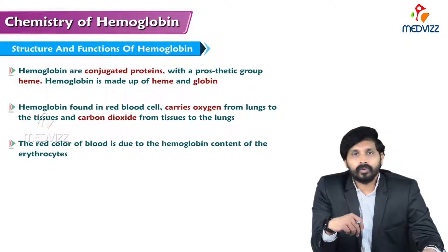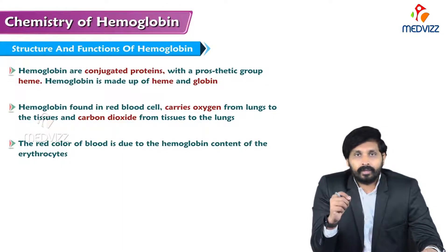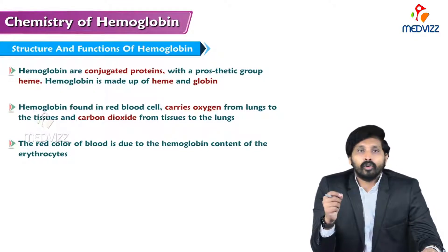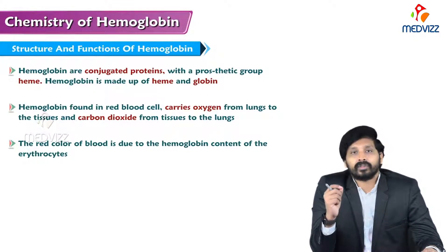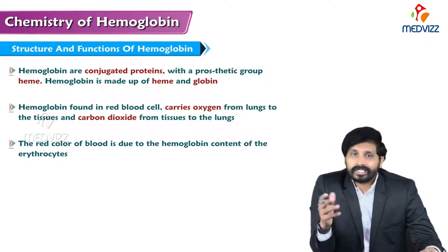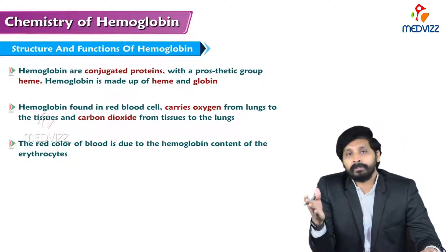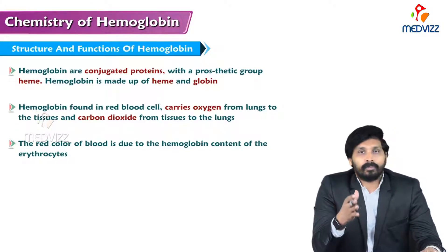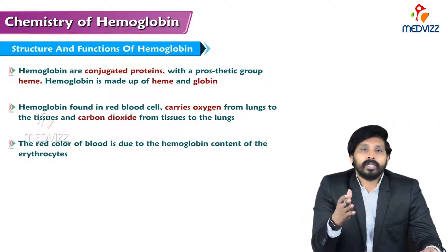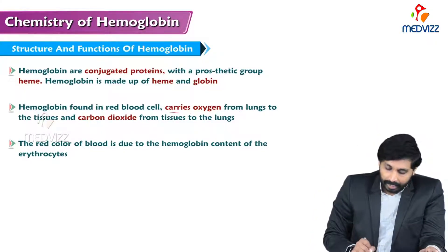In this video we will discuss the structure and functions of hemoglobin. Hemoglobin is the basic component of erythrocytes — red blood cells. By nature, hemoglobin is a conjugated type of protein, meaning it is a combination of a protein part and a non-protein part. The protein part is the globin chain and the non-protein part is heme.